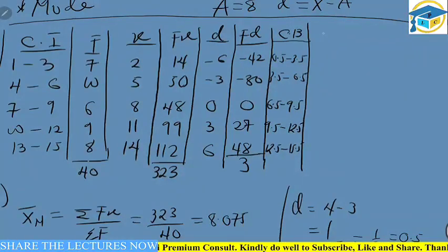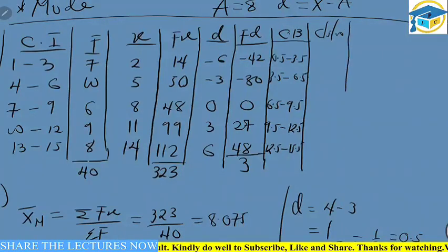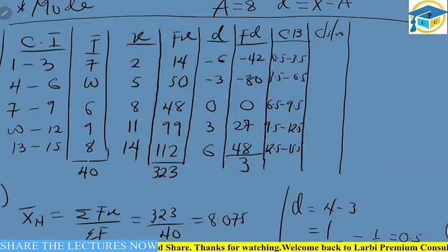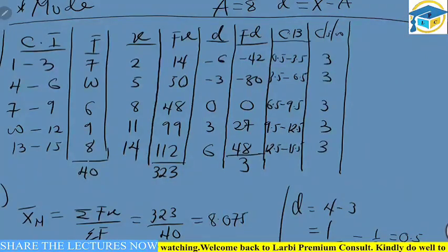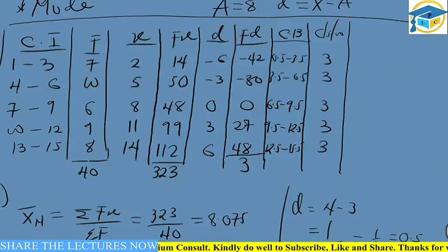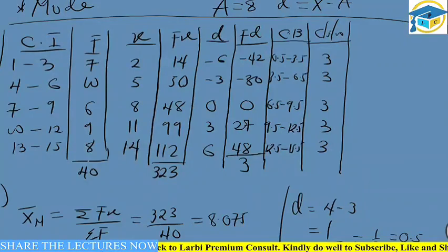We continue to find our class size or class width, which is the difference between the lower class boundary and the upper class boundary of a particular class. The difference between 3.5 and 0.5 gives us 3. So all class widths are 3. When it comes to the coding method, it makes use of equal class intervals — without that, it will affect the mean.